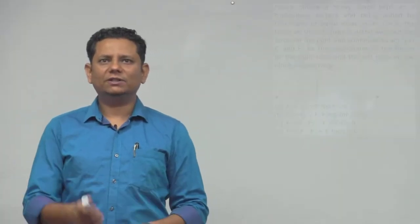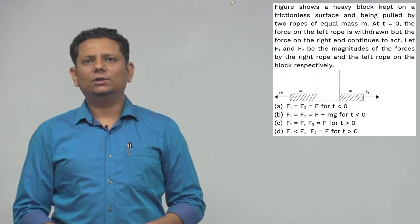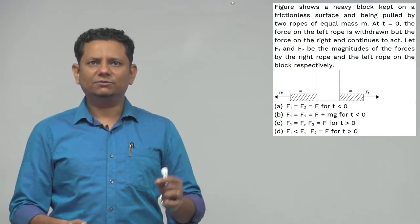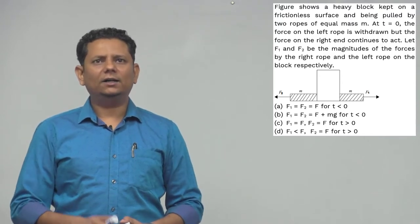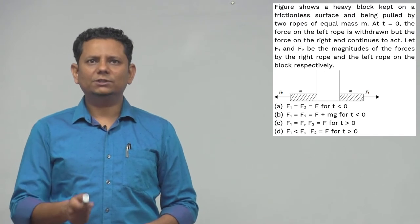Next question: Figure shows a heavy block kept on a frictionless surface and being pulled by two ropes of equal mass m. At t equals 0, the force on the left rope is withdrawn but the force on the right end continues to act. Let F1 and F2 be the magnitude of the forces by the right rope and left rope on the block respectively.